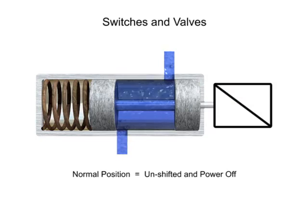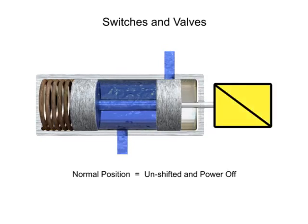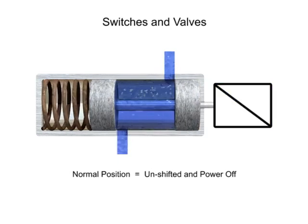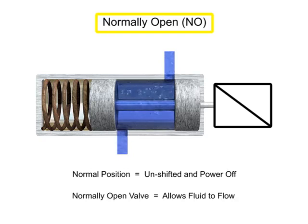The terms normally opened and normally closed are used to describe the condition of a valve when it is in the normal position. For this valve, the normal position allows unrestricted fluid flow through the open ports. Therefore, this valve is a normally open valve.